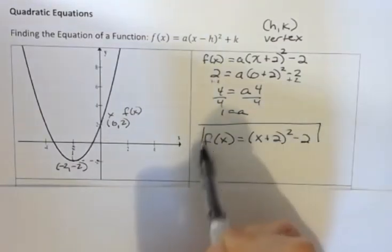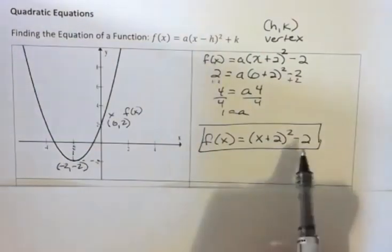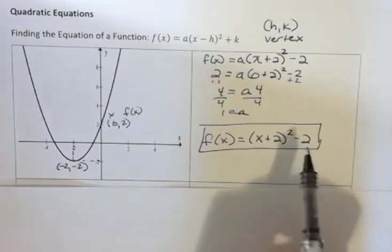Notice that that number at the end, that negative 2, that's the vertical shift. From 0, we go down 2. That's always a nice thing to look at. That's your vertical shift on that equation.